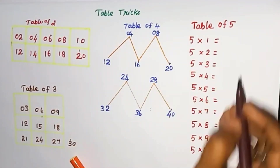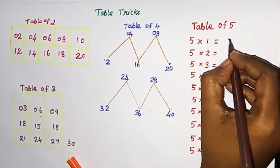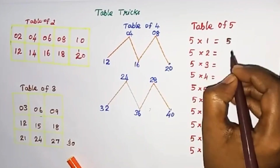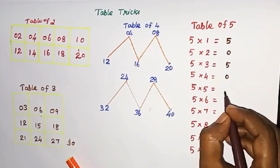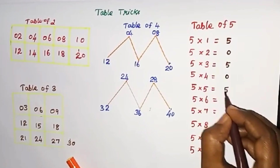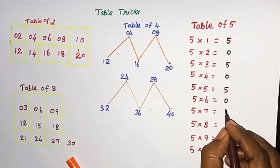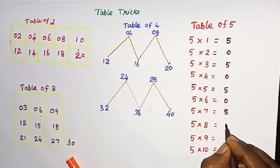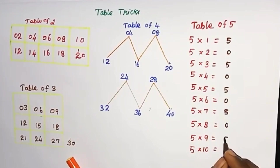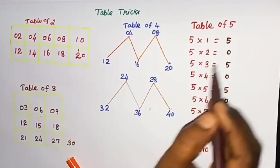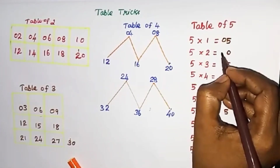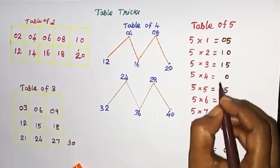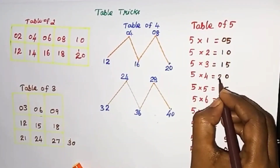Table of 5. Write 5, 0. 5, 0. 5, 0. 5, 0. 5, 0. Here we have to write 0. 1, 1. 2, 2.